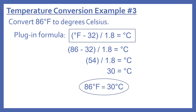Plugging in our Fahrenheit number: 86 minus 32 equals 54, then divided by 1.8 gives us 30. So 86 degrees Fahrenheit equals 30 degrees Celsius.